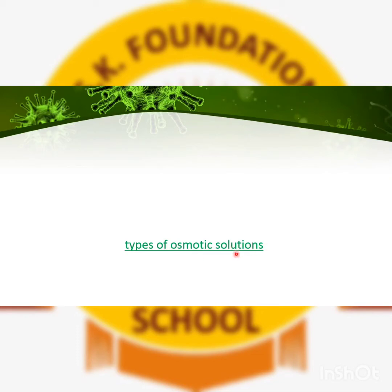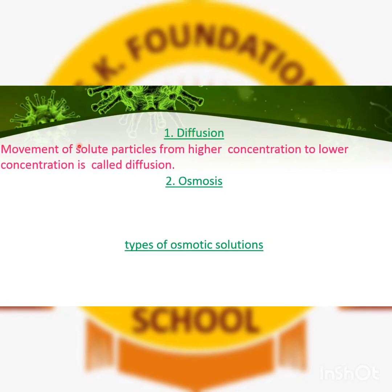Now, the cell portion is complete. We will move on to solutions — how many types of solutions there are. But before learning the types of solutions, you need to learn what is diffusion and what is osmosis. Diffusion means the movement of solute particles from higher concentration to lower concentration. The movement from higher concentration to lower concentration is called diffusion.